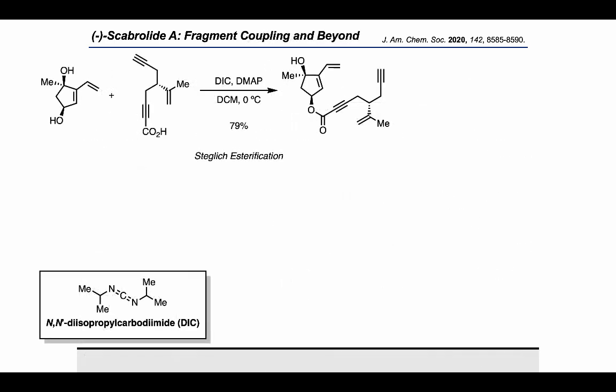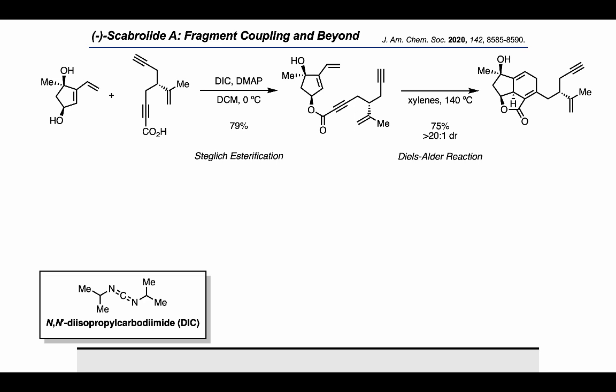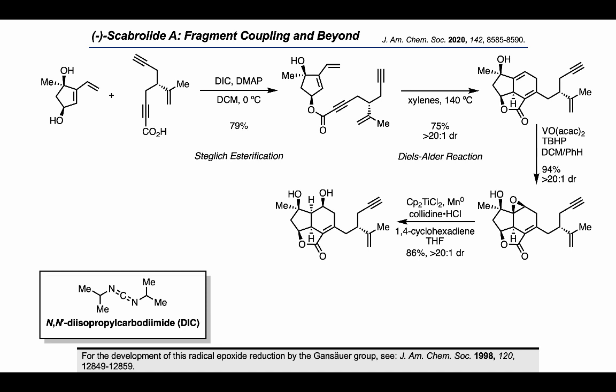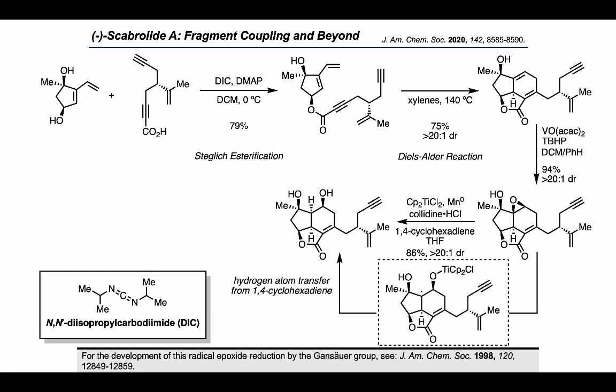Taking a look at their fragment coupling strategy, they used DIC and DMAP to do a Steglich esterification and form the ester. Putting that intermediate in xylenes at 140°C got the Diels-Alder reaction to go, and directed epoxidation with vanadium and TBHP gave the epoxide in a highly diastereoselective fashion. Then they found that they could use Gansauer's radical reductive opening of epoxides with titanium, which is presumably going through a ring-opened intermediate where the radical is trapped in a hydrogen atom transfer with 1,4-cyclohexadiene. IBX could then be used to oxidize the alcohol to the ketone.